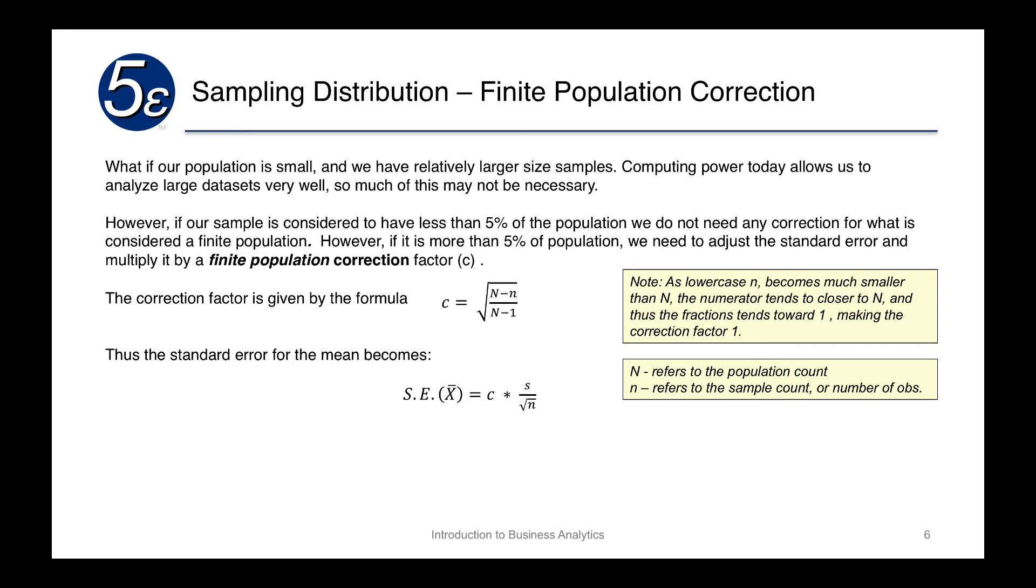But going back to the example, let's assume that there is a very small population with a rare disease. Now, if our sample is considered to have less than 5% of the population, we don't need to do any correction for what is known as a finite population. However, if we have more than 5% of the population in our sample, then we'll need to adjust the standard error slightly. And we do this by multiplying it by what's called a finite population correction factor, which we'll label as C.